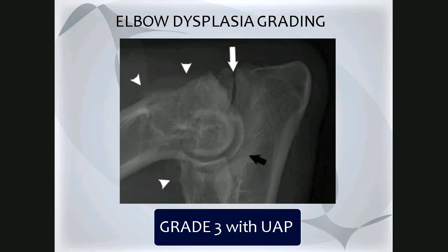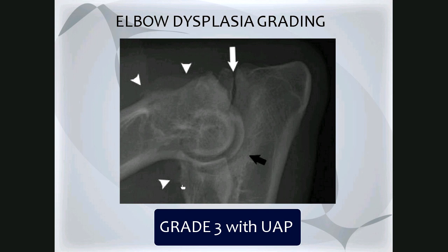Lastly, in this image there is very clearly an ununited anconeal process — the minute a cause for elbow dysplasia can be identified, the patient automatically receives a grade 3. This patient also has severe arthrosis with marked osteophytic new bone on the lateral epicondylar crest, new bone along the radial head, infratrochlear sclerosis, and a blunted medial coronoid process lacking its normal sharp triangular appearance. So this dog automatically gets a grade 3.